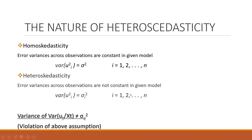What is the nature of heteroscedasticity? If the error variances across observations are constant in a given model, we say we have homoscedasticity. But if they are dependent on time or any other variable, such that error variances across observations are not constant, then we say it is heteroscedasticity. Basically, we have violated the assumption of homoscedasticity and therefore it creates a problem.